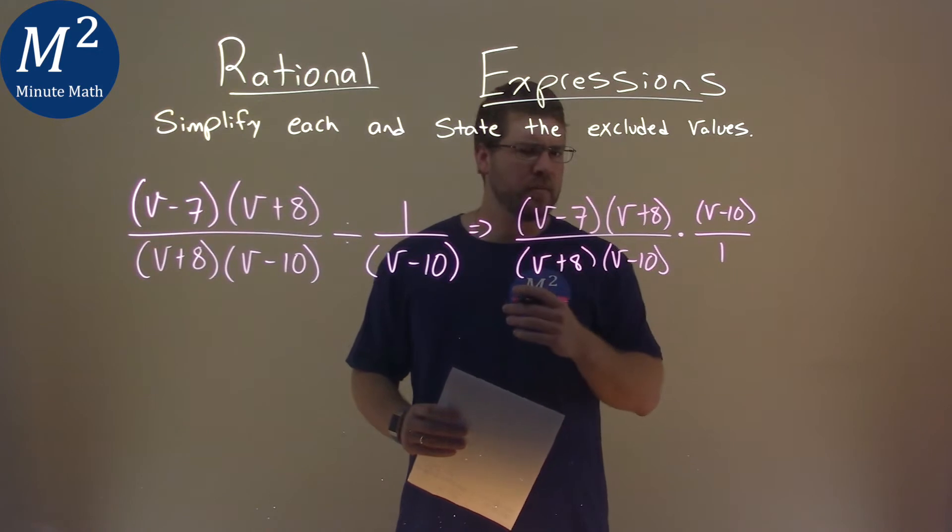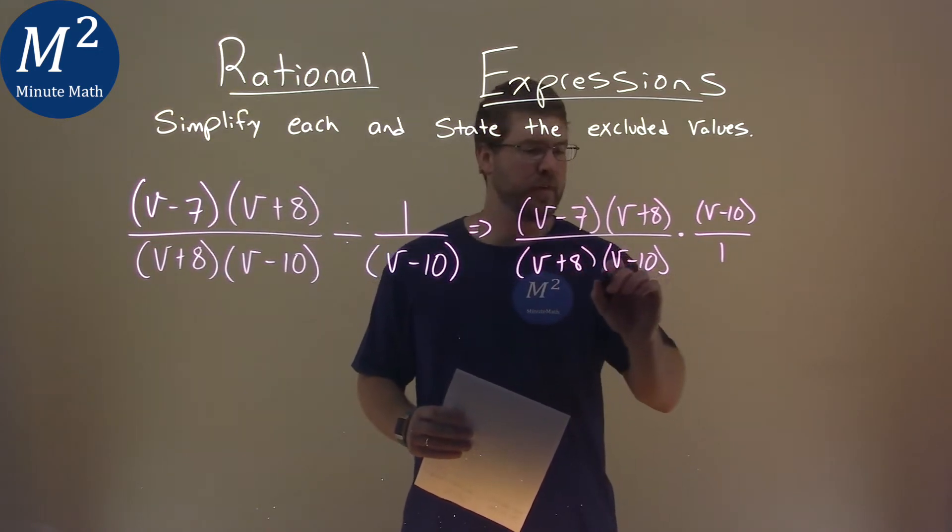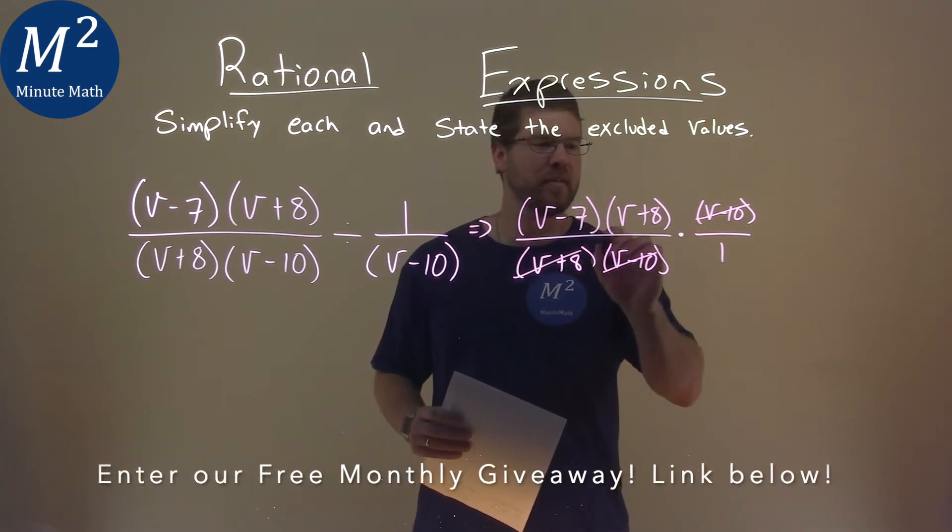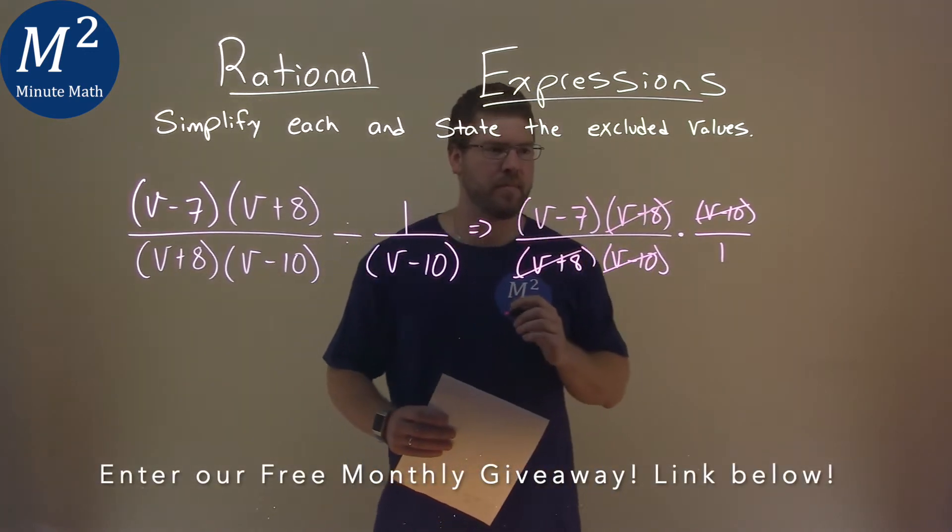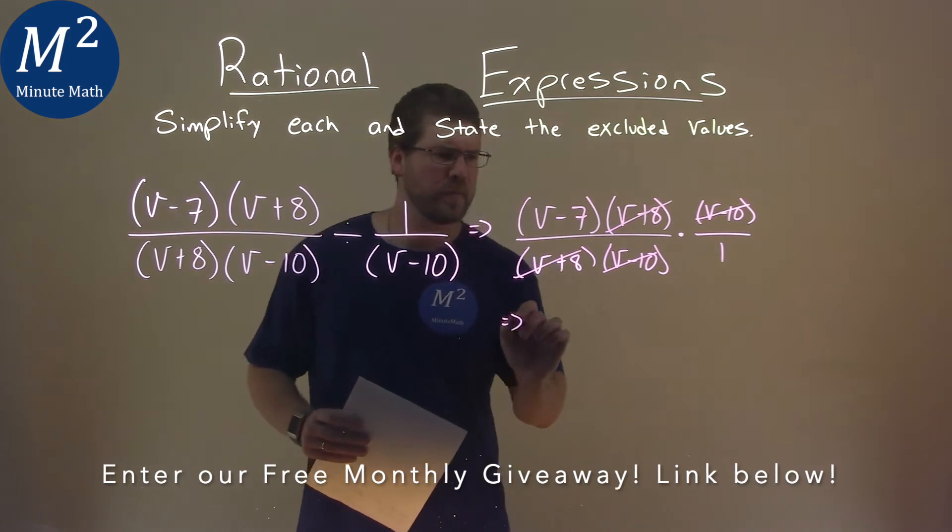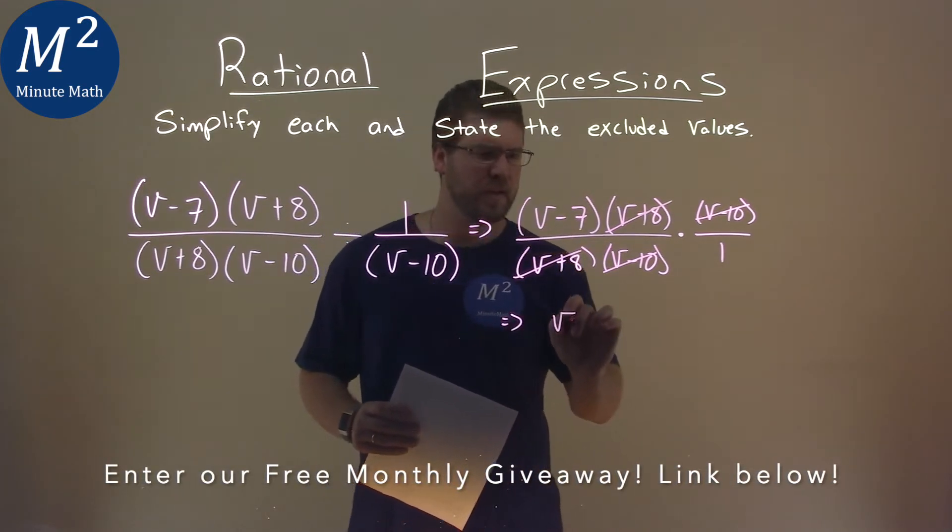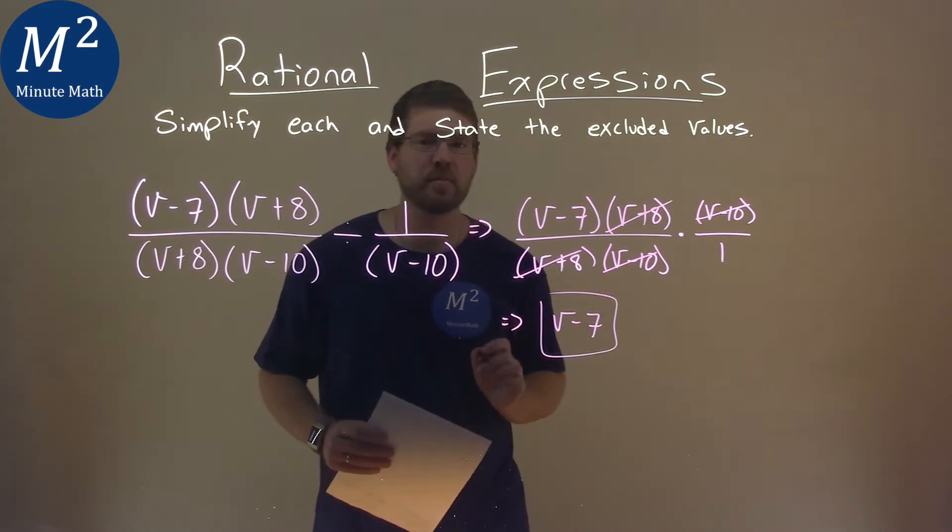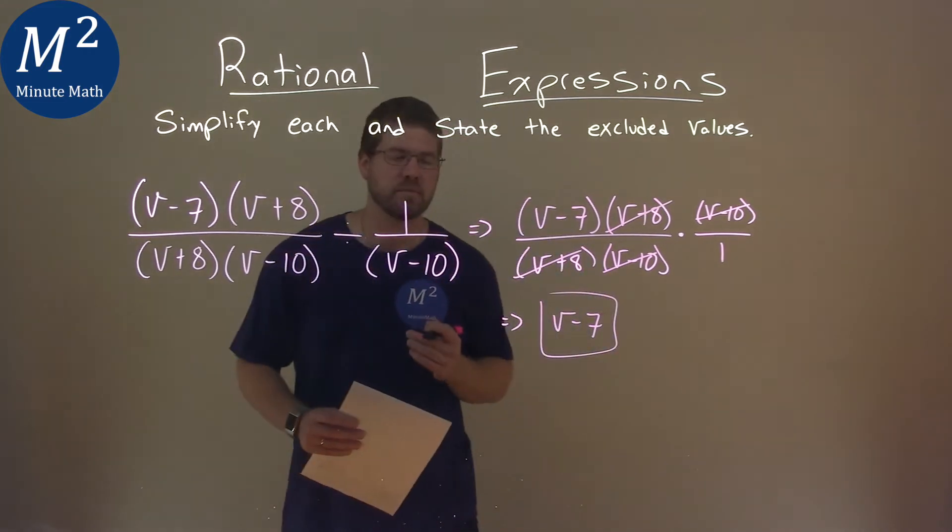We can start crossing some things out that repeat. v minus 10 and v minus 10, they cancel each other out. v plus 8 and v plus 8 cancel each other out. So what are we left with? Well, we're left with just that v minus 7 in the numerator. And so this is actually our simplified value of this expression.